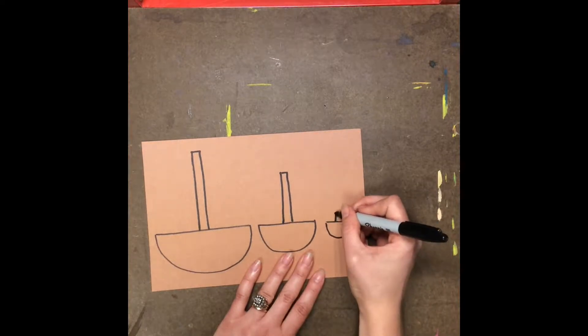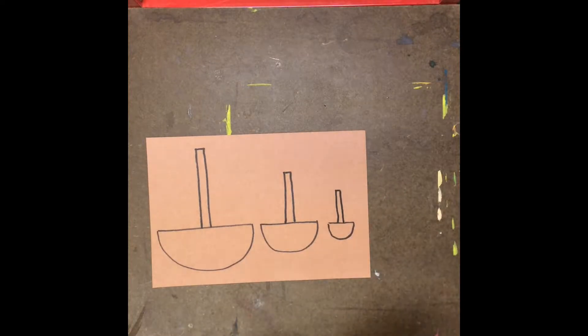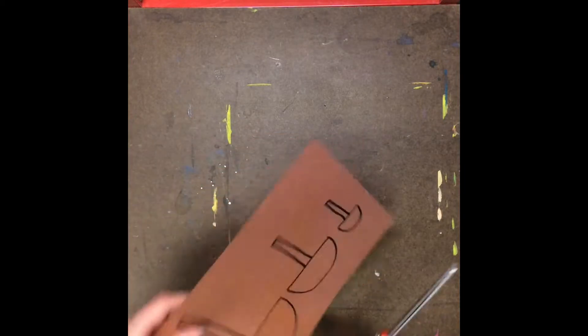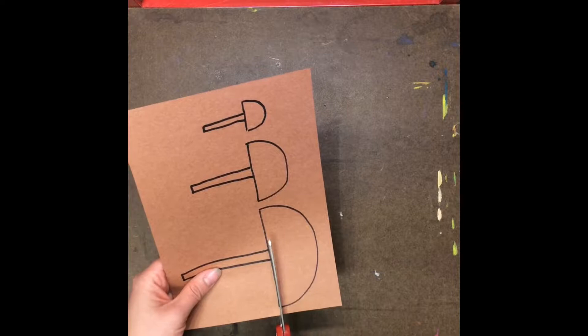If all three of your boats don't fit on your paper then you might need to erase. Now after I have them so that they all fit I'm going to very carefully cut them out. I'm going to start with my big boat first.